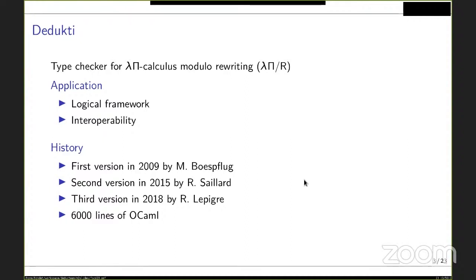For a bit of history: DEDUCTIE was first developed in 2009 in Haskell and Lua by Mathieu Bouesflue, then rewritten completely in OCaml in 2015 by Ronald Sayer. That version already included decision trees, but non-linearity and higher-order rewriting were handled naively. A third version was created in 2018 by Rodolf Lepiga, more focused on interactivity, and is made of 6,000 lines of OCaml.